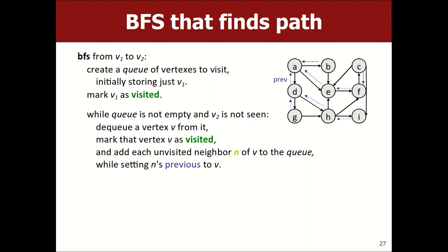For DFS you don't need the previous pointer because the recursion call stack itself represents your current path. You store visited vertices in a vector along your recursion calls; if you find the target, that vector is your path; if not, you un-choose and remove. With BFS you're implicitly exploring many paths one step at a time, so you can't represent them all in one vector — that's why you need previous pointers instead.